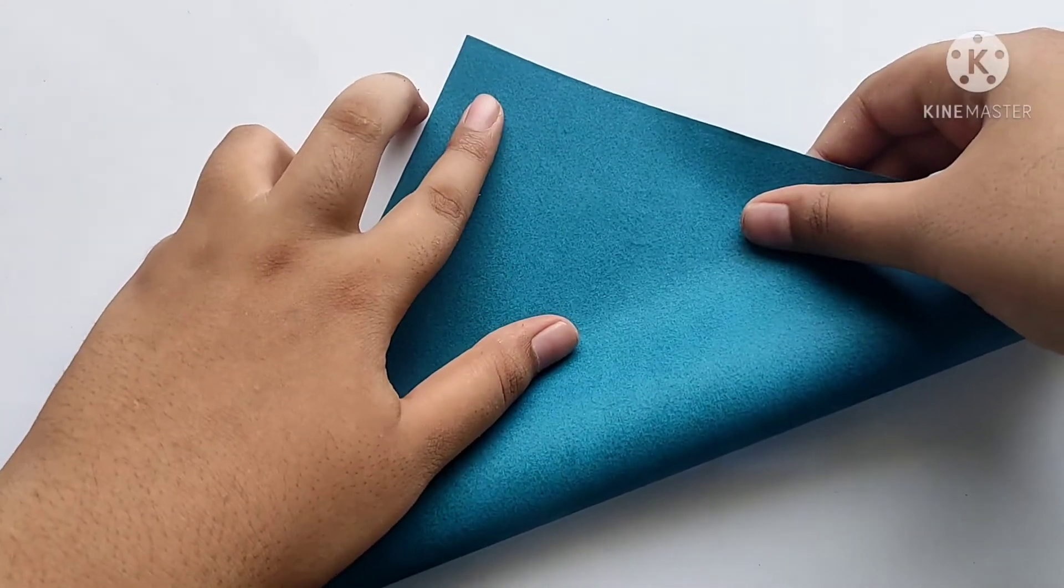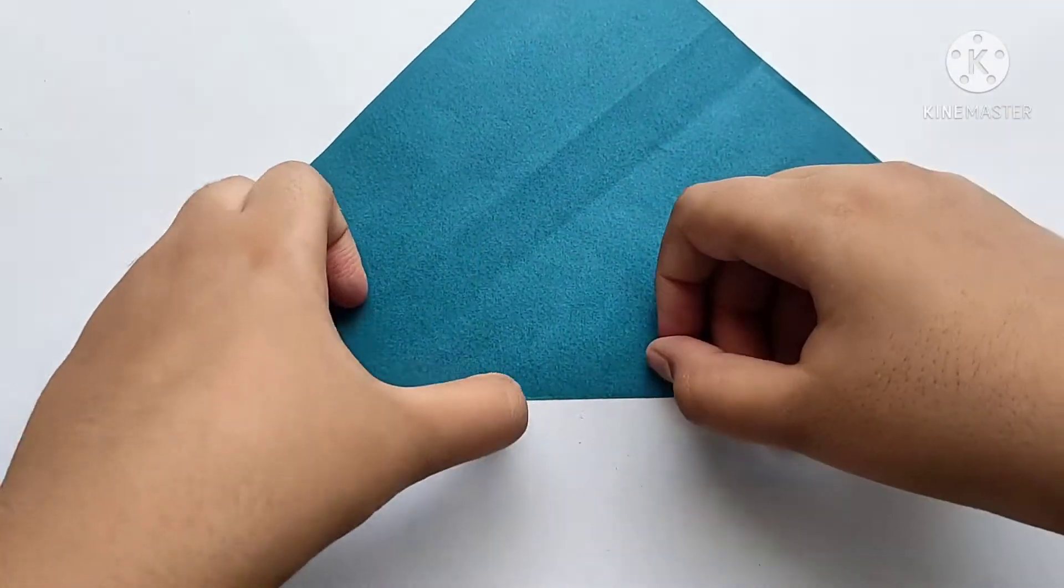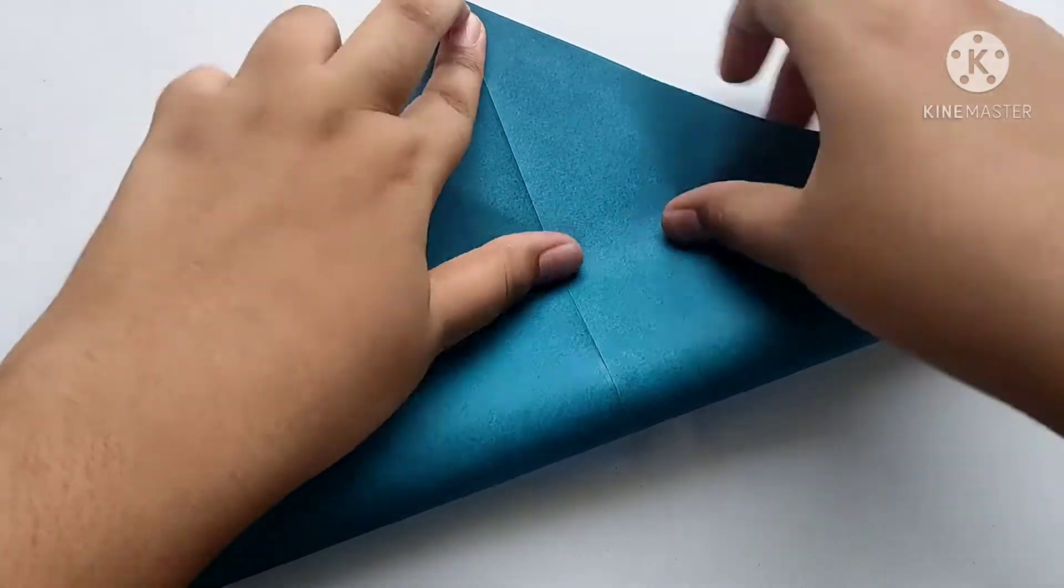Friends, for making an origami cap, we need to take a square and fold diagonally like this. After, we need to fold another diagonal too.